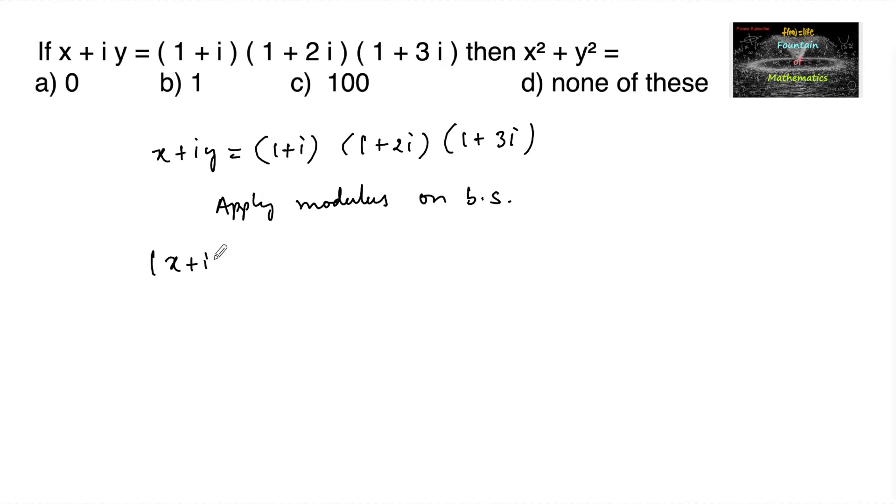We can write modulus of x plus iy is equal to modulus of 1 plus i into modulus of 1 plus 2i into modulus of 1 plus 3i since we had a property modulus of z1,